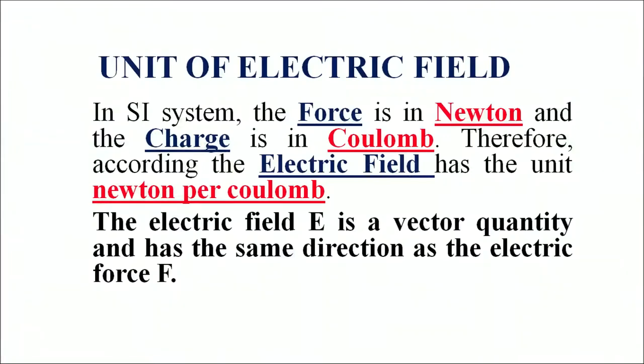Now let us define the unit of electric field. In the SI system, the force is in Newton and the charge is in Coulomb. Therefore, the unit of electric field will be Newton per Coulomb, because the formula for electric field is E is equal to F upon charge — it is force per unit charge — so it is Newton per Coulomb.